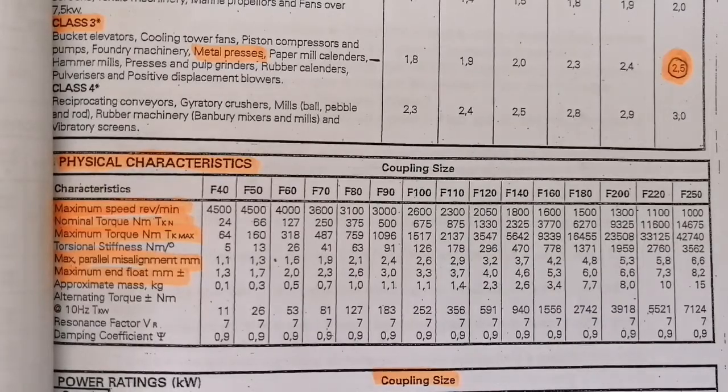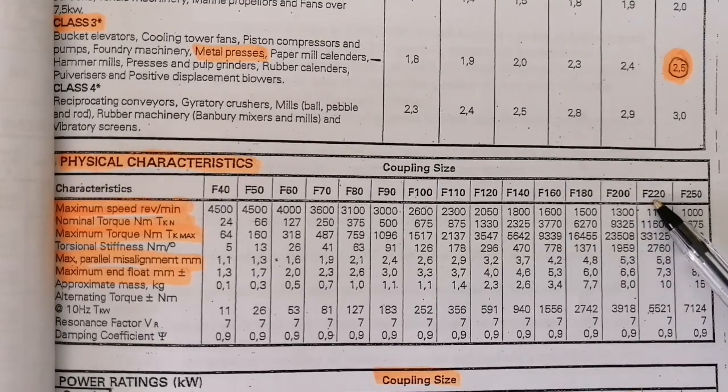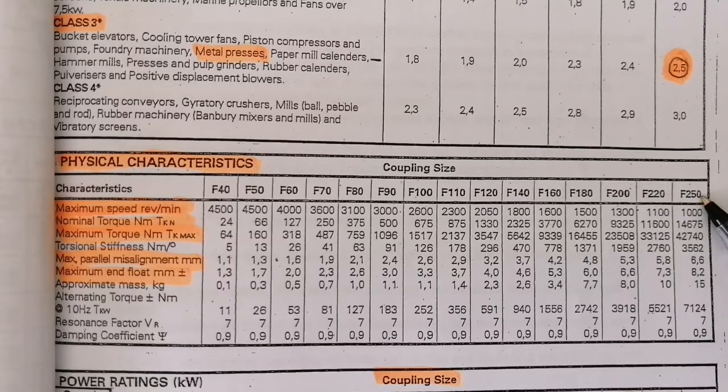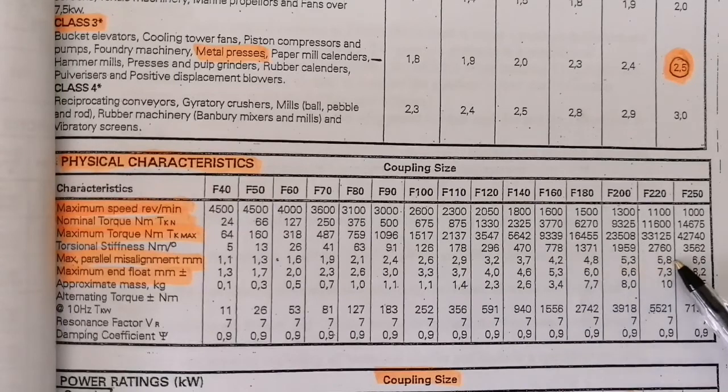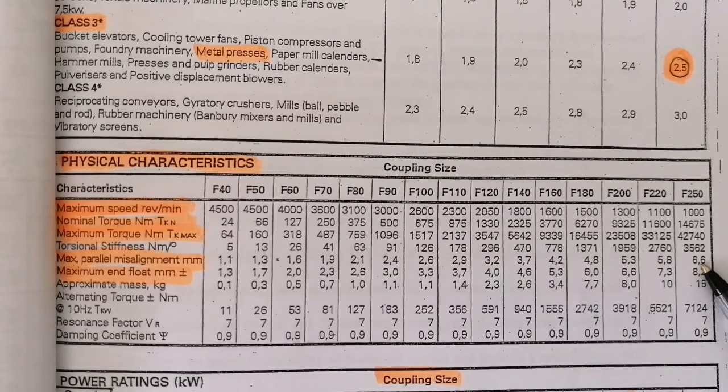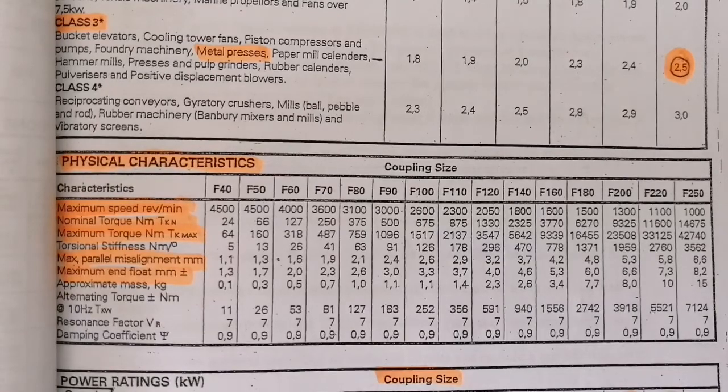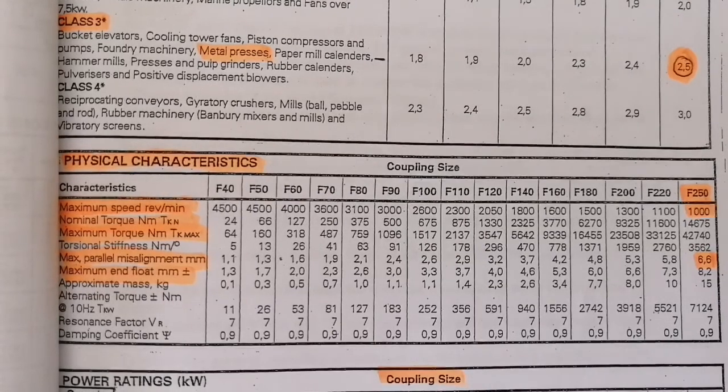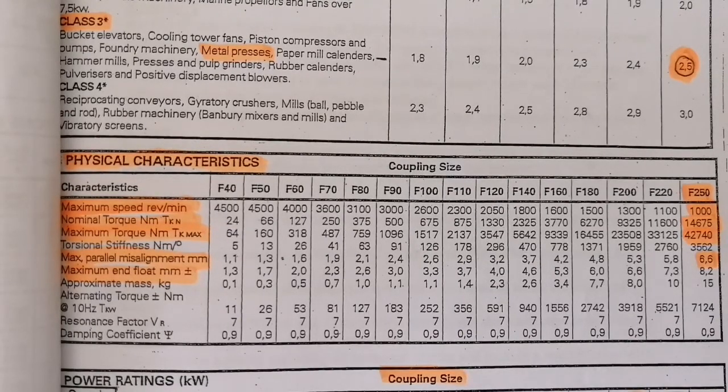Now let's revisit the maximum parallel misalignment. We know that the F200 and F220 cannot handle that type of misalignment. So the next thing to do is go to the next higher coupling and see what it can handle. Let's look at the F250. Looking at the maximum parallel misalignment going across, we've got 6.6 millimeters and it's more than required - we require only 6. All the other characteristics are in check: the maximum speed, the nominal torque, the maximum torque, and of course the end float which is 8.2 millimeters.